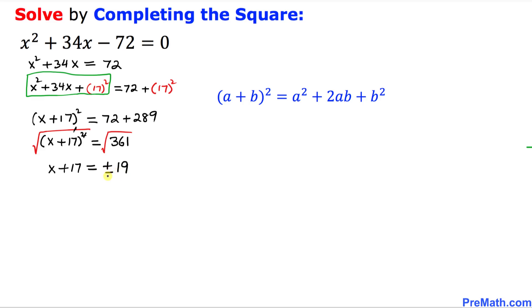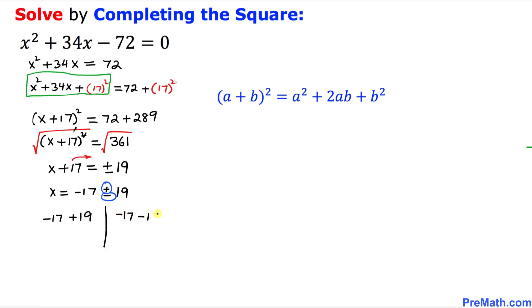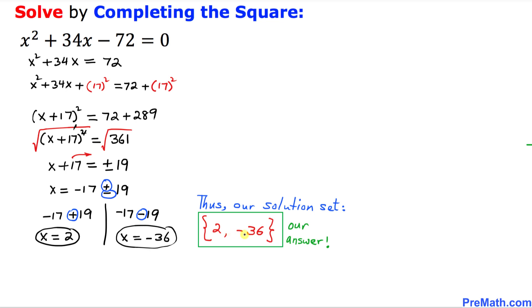We use plus or minus because we are dealing with quadratics. Moving positive 17 to the right-hand side, X equals negative 17 plus or minus 19. Splitting the signs: negative 17 plus 19 gives our first solution of 2, and negative 17 minus 19 gives our second solution of negative 36. Our solution set is 2 and negative 36.